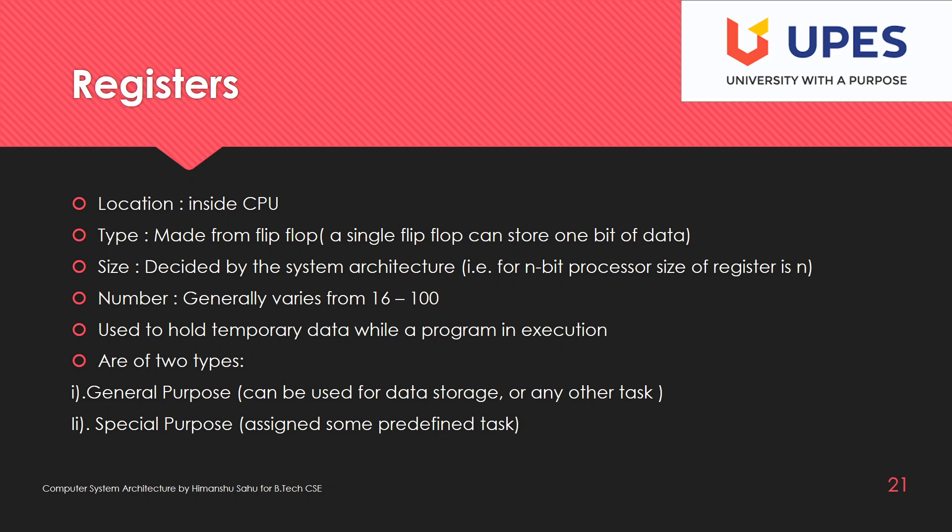The size of the register is decided by the system architecture. For an n-bit processor, the size of the register is n bits. For a 64-bit processor, the register size is 64 bits. Generally we have from 16 to about 100 registers. They are used to hold temporary data while a program is in execution.